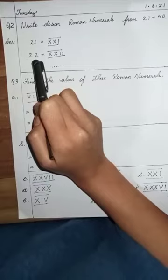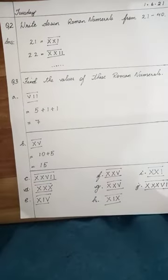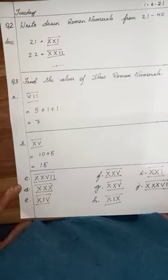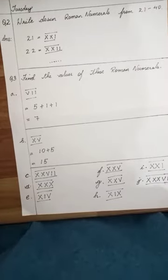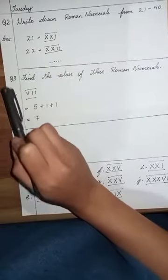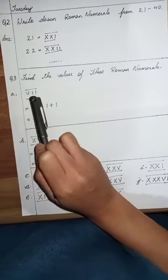Number 203 is Hindu-Arabic numerals. Question number 3 is V11.